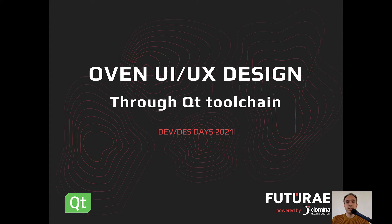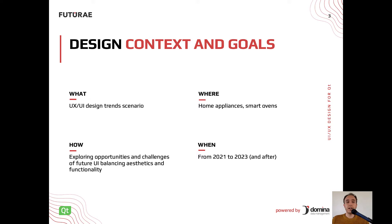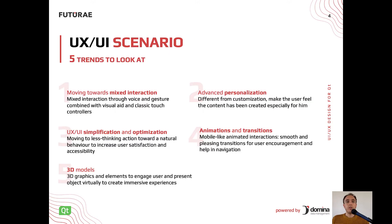The aim of the project is to deliver a demo of three target screens and a companion app for an oven interface using Qt. Let's start with UI/UX design trends and highlights research based on our experience, papers and trends we found on the web, in order to provide a context and scenario especially in home appliances and smart oven interfaces from now to the next few years. We highlighted five trends to look at in the UI/UX scenario.